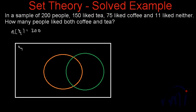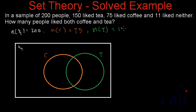Let me draw two circles. This circle is the set of people who liked coffee, and this is the set of people who like tea. The cardinal number of set C — people who like coffee — is 75, and the cardinal number of set T — people who like tea — is 150. The 11 people who didn't like either coffee or tea are written outside both circles, so 11 goes here.